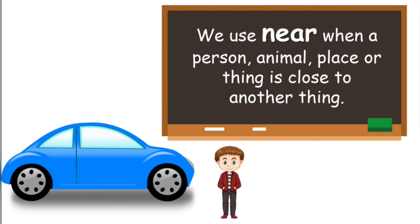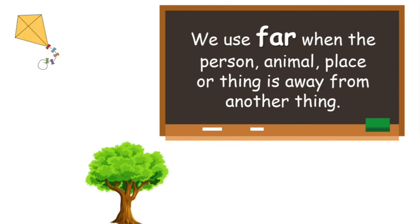Again, we use Near when a person, animal, place, or thing is close to another thing. And, we use Far when the person, animal, place, or thing is away from another thing.